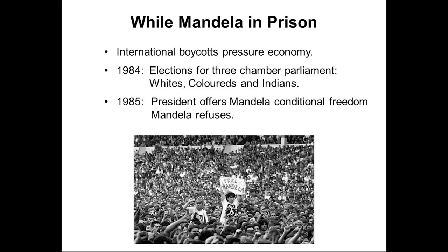In 1984, as a first step to show they were willing to share power, the National Party set up a three-chamber parliament with the whites, coloreds, and Indians — noticeably no black representation. This was their first attempt at liberalization. In 1985, the president of South Africa offered Mandela and his co-prisoners freedom if they would renounce violence, and they said no. So they stayed in jail for another six years.